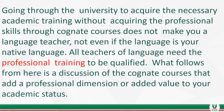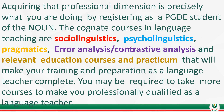What follows is a discussion of the cognate courses that add professional dimension and value to your academic status. For you to be certified as a teacher, you have to be exposed to professional training and cognate courses — that is the essence of this course, especially for those who are already graduates but are not trained teachers. The cognate courses in language teaching include: sociolinguistics, psycholinguistics, pragmatics, error analysis, contrastive analysis, relevant education courses, and teaching practice.